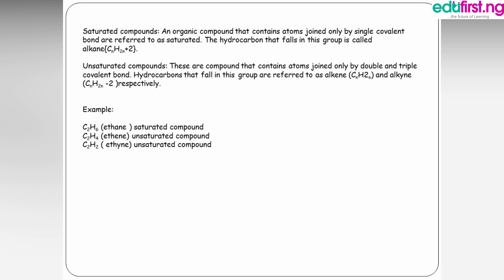I'm covering the basics of organic chemistry so that when it comes to naming, you'll be able to name compounds effectively. Saturated compounds are organic compounds where atoms are joined only by single covalent bonds — the only saturated hydrocarbon family is alkanes. Unsaturated compounds contain atoms joined by double and triple covalent bonds. Alkenes have the molecular formula CnH2n, and alkynes have the molecular formula CnH2n-2. For example, with n equals 2: ethane is C2H6, ethene is C2H4, and ethyne is C2H2.